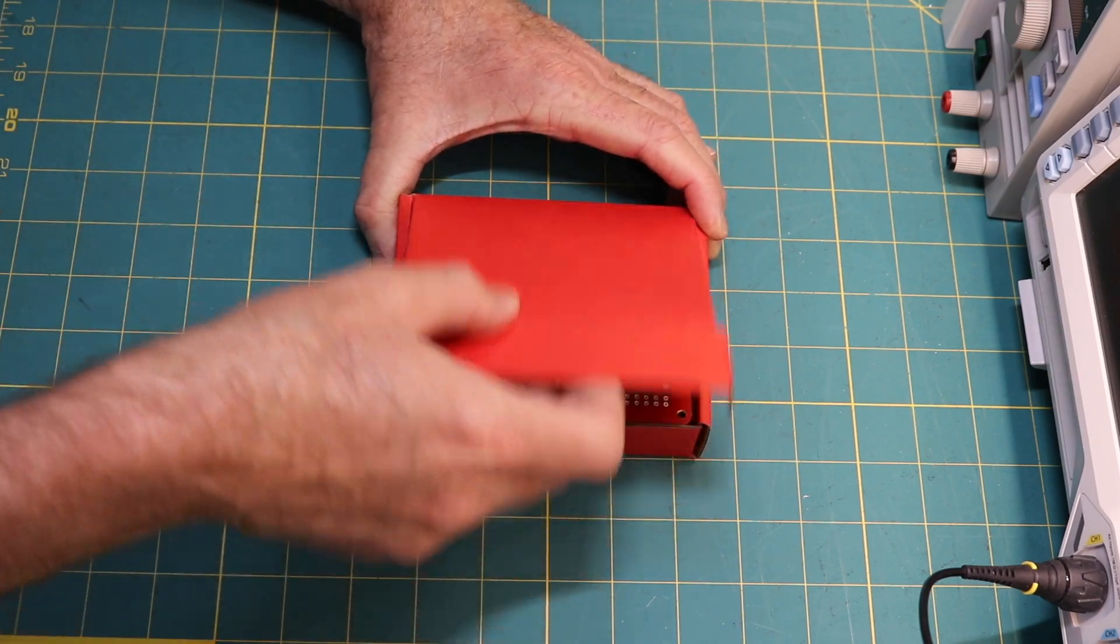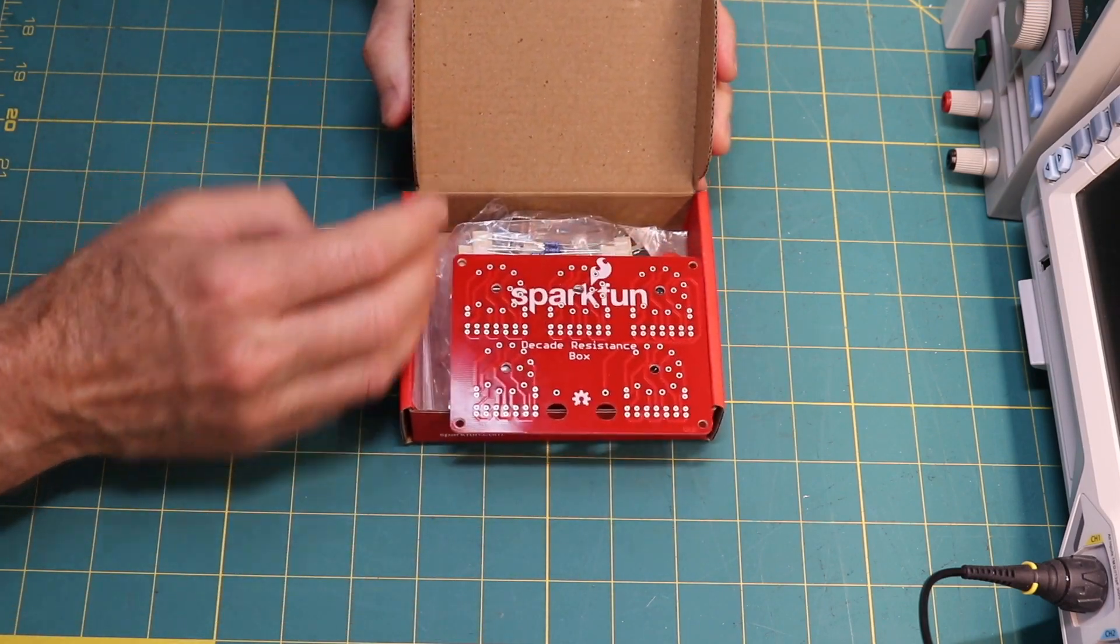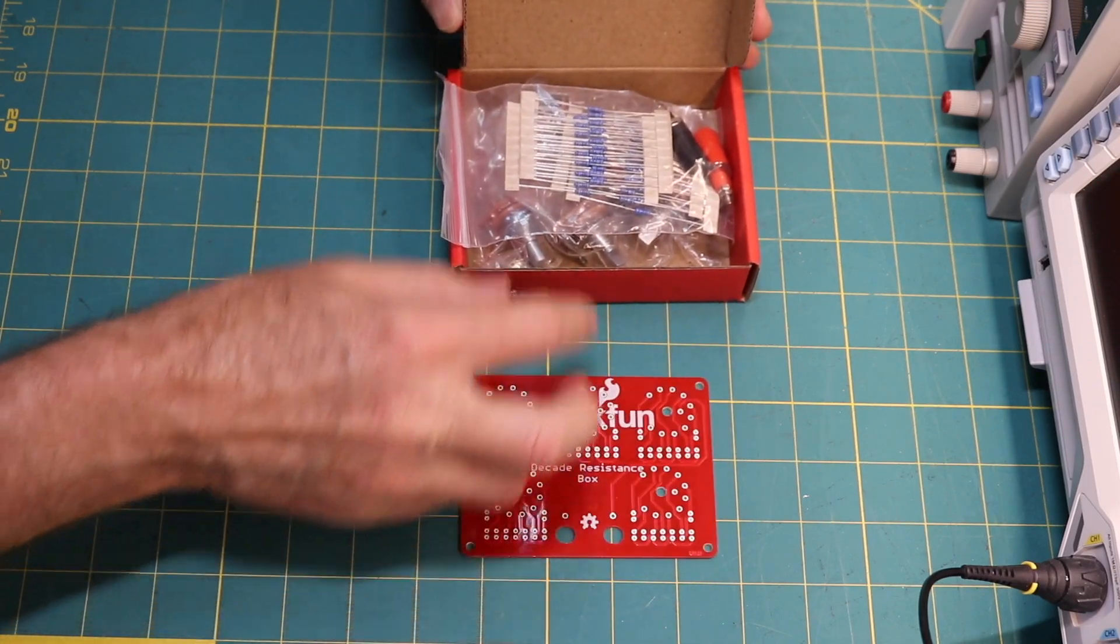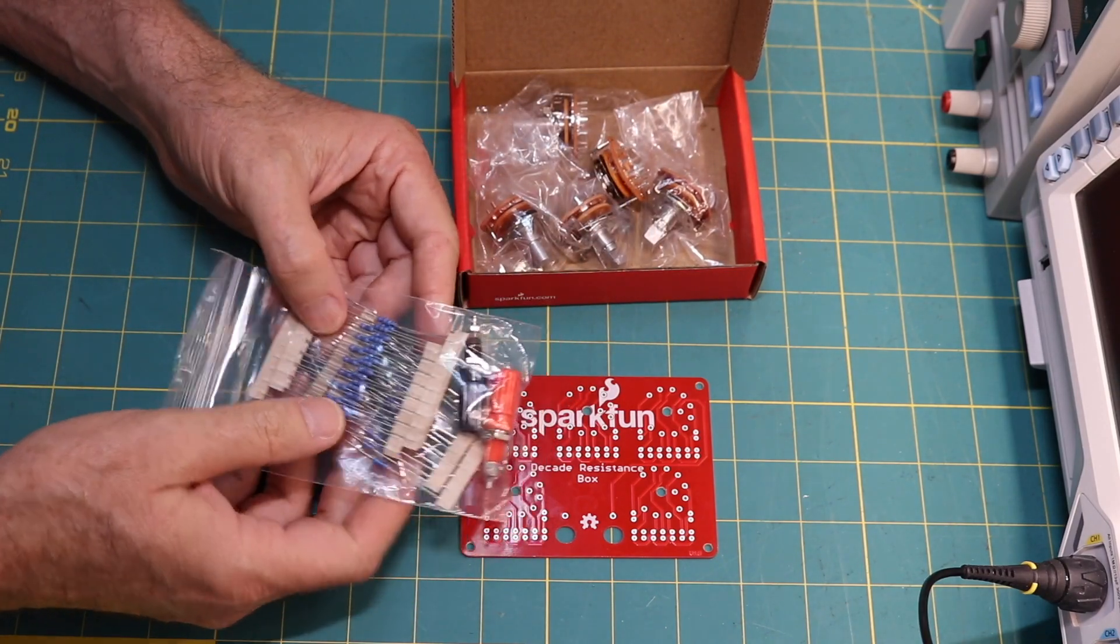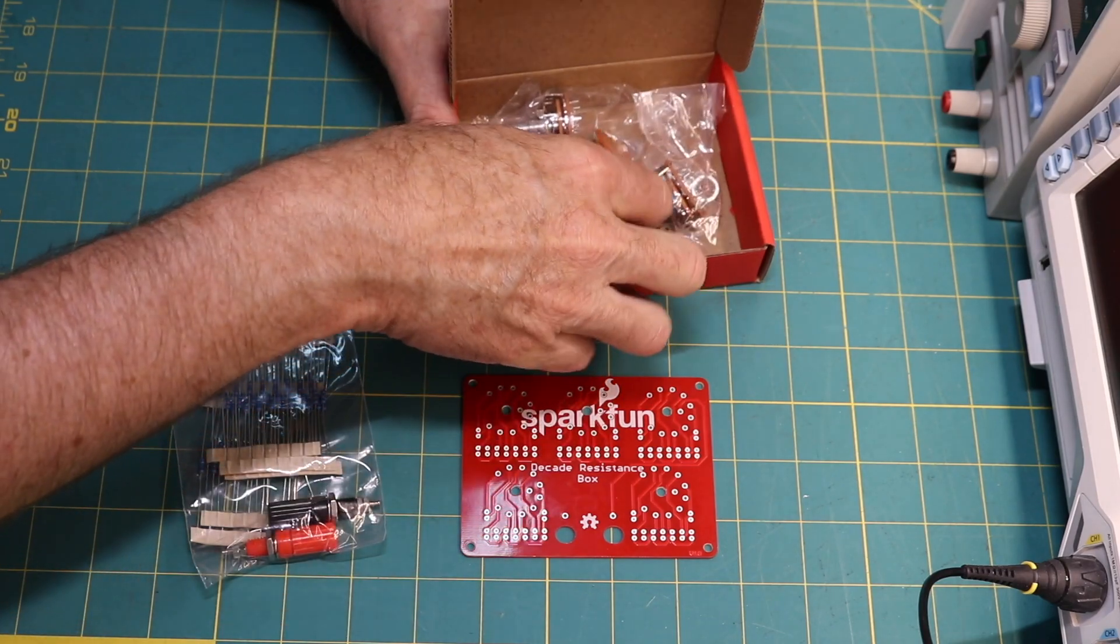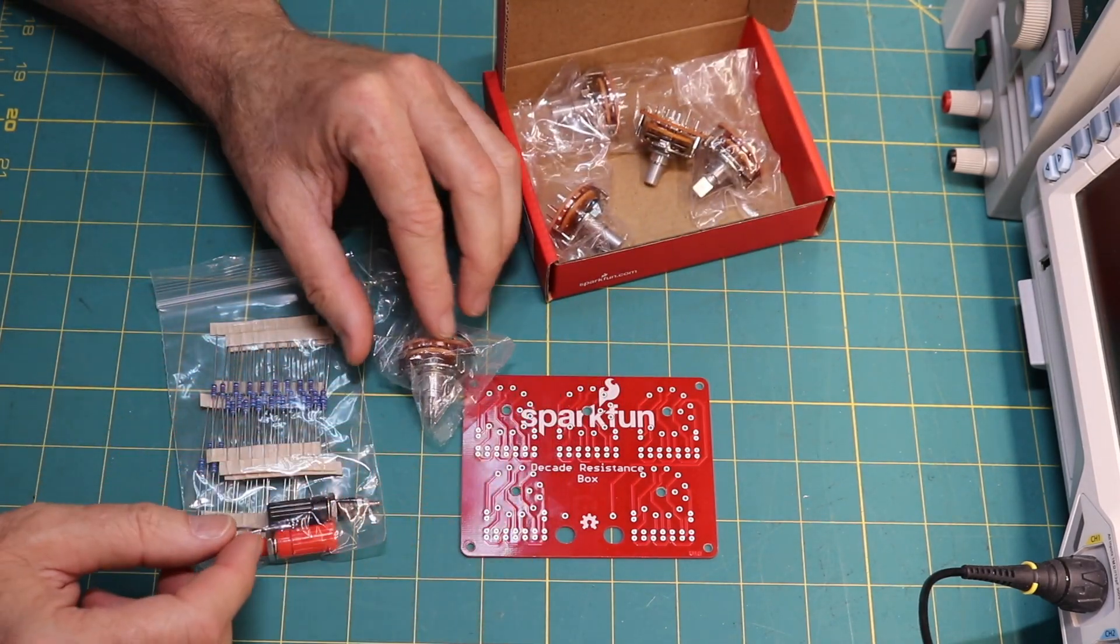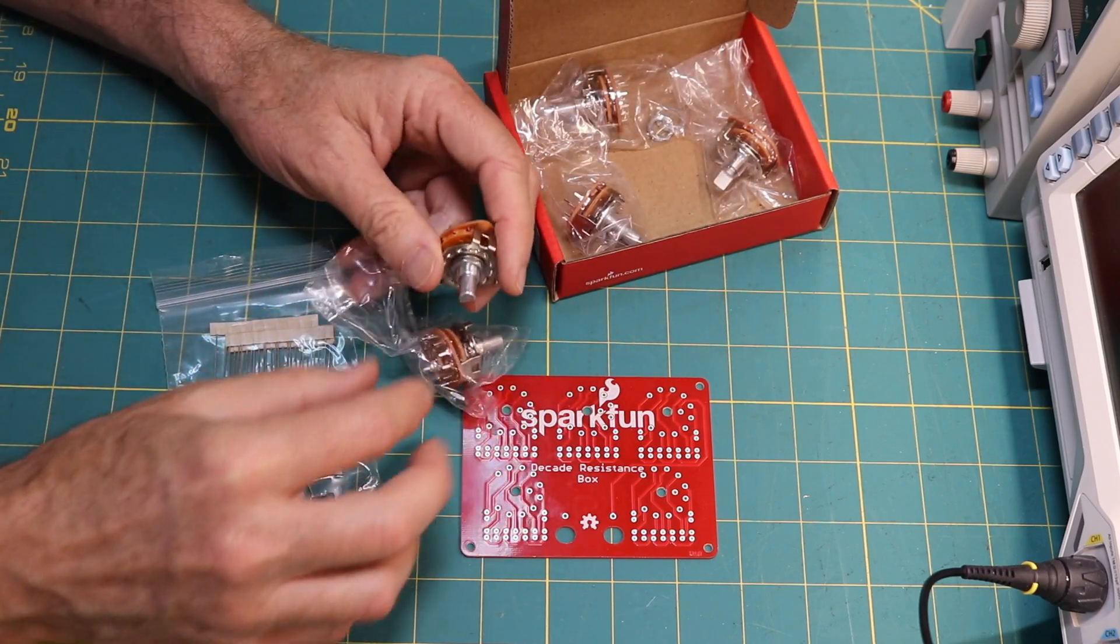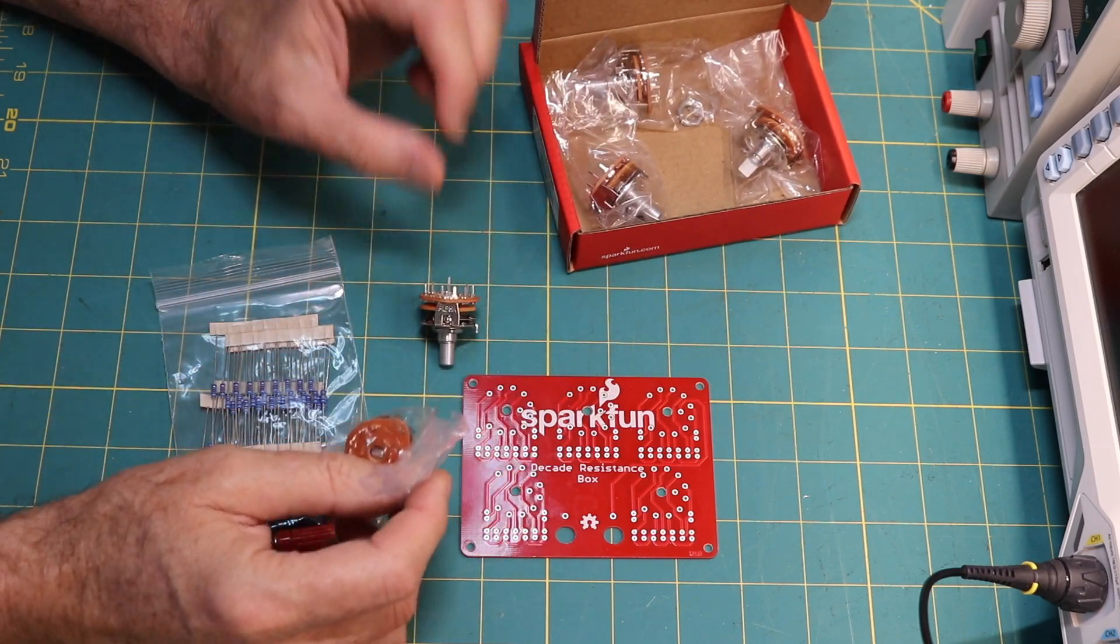I'll open it up real quick. You get the circuit board, the resistors, banana jacks, and the rotary switches. So it's just about everything you need to do the project.